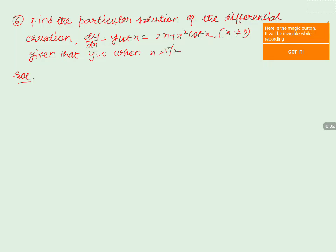Find the particular solution of the differential equation. The given differential equation is dy/dx + y·cot(x) = 2x + x²·cot(x), given that y = 0 when x = π/2.